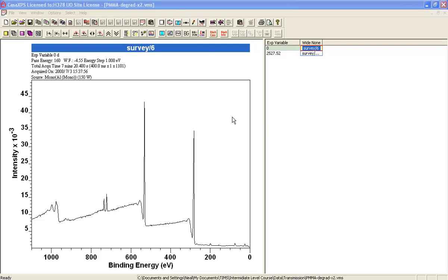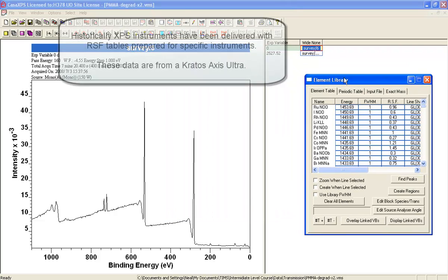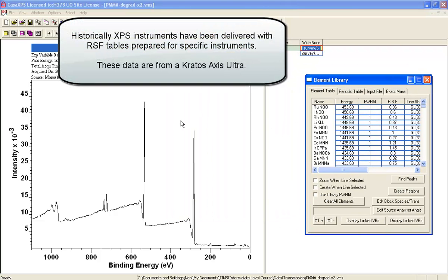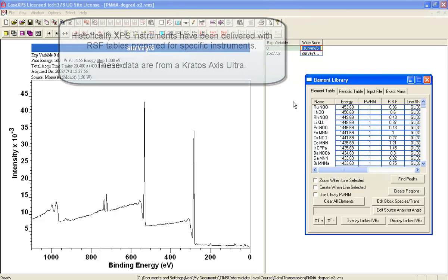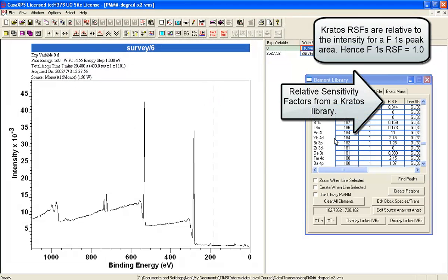We'll begin by using the relative sensitivity factors and the element library that is delivered with the instrument that measures these data. Since this is from a Kratos-Axis-Ultra, we have an element library set up for a Kratos system with the Kratos RSFs.